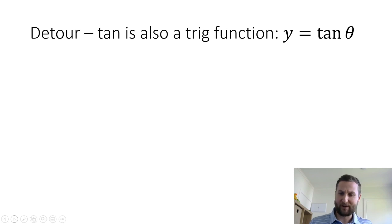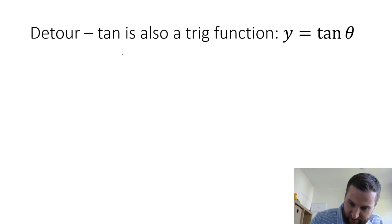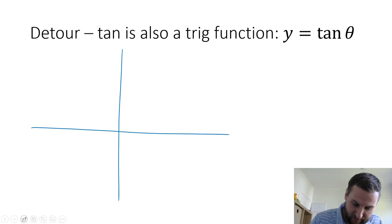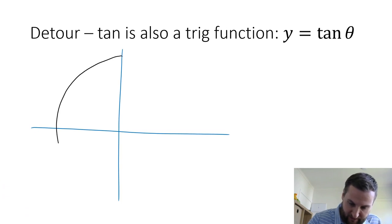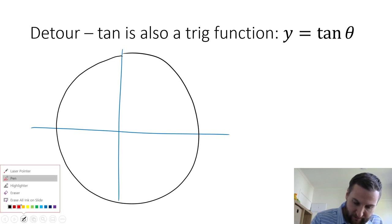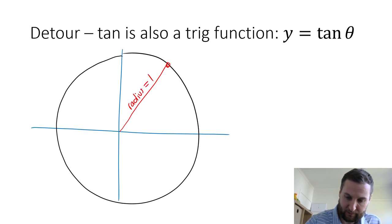So where does tangent come from? Let's just take a quick detour because we're also familiar with y equals tangent of theta as a trig function. So let's sketch out where tangent comes from. I'm going to draw a unit circle with my axis here, and the radius is equal to one.